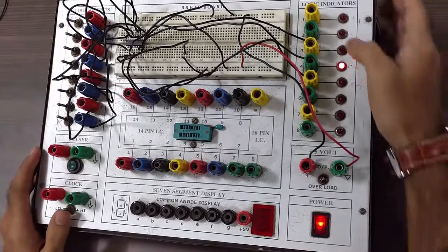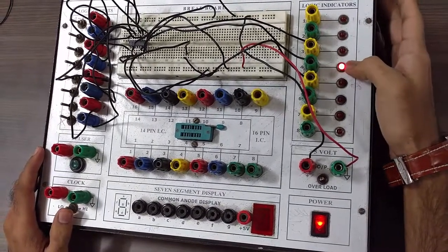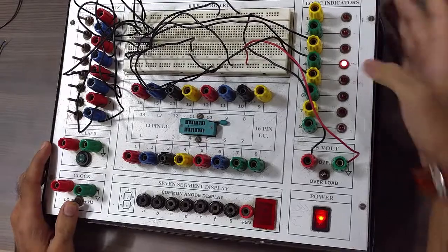So both of them are equal. Hence, A equal to B is glowing. This is for A equal to B, this is for A less than B, and this is for A greater than B.